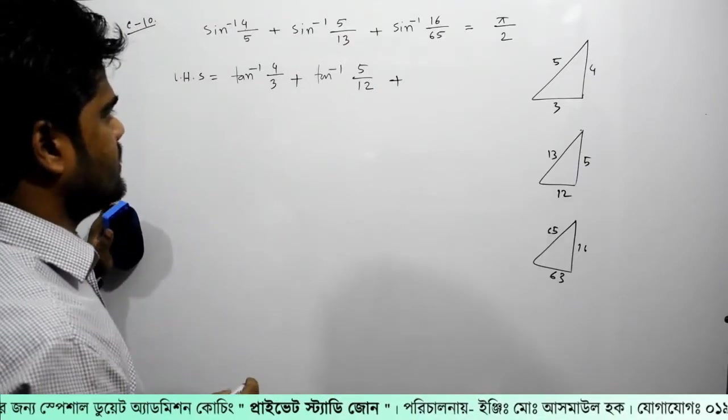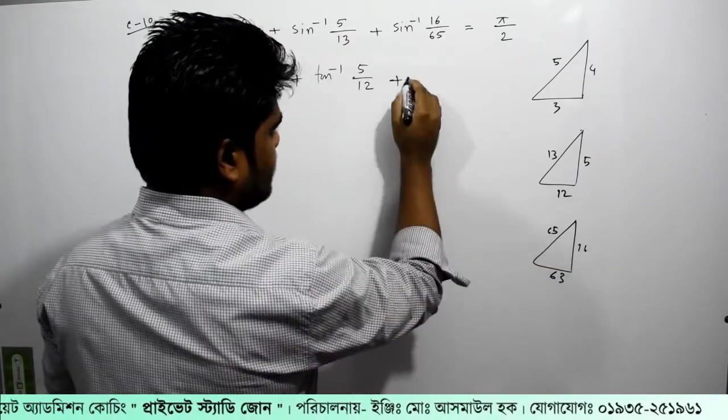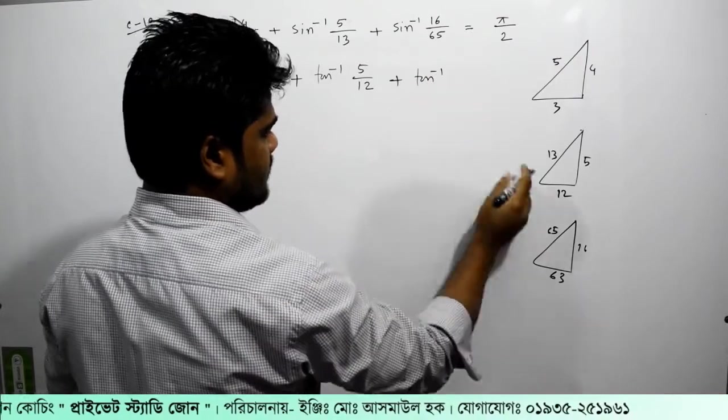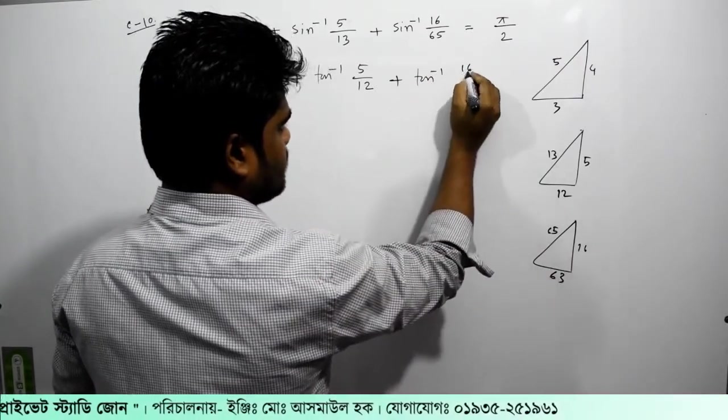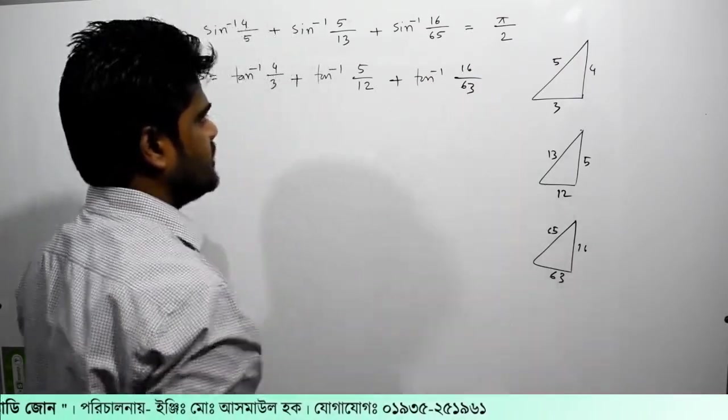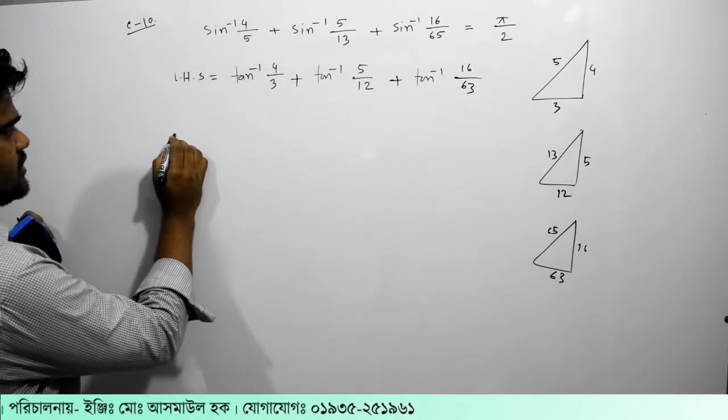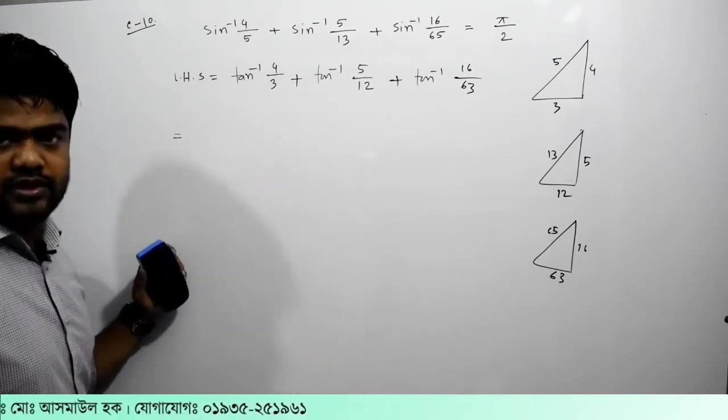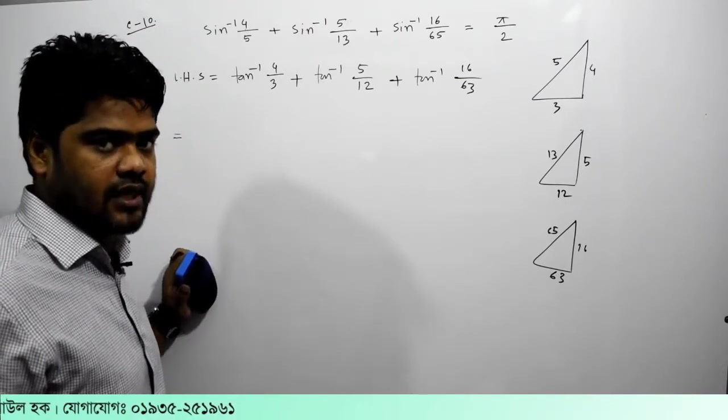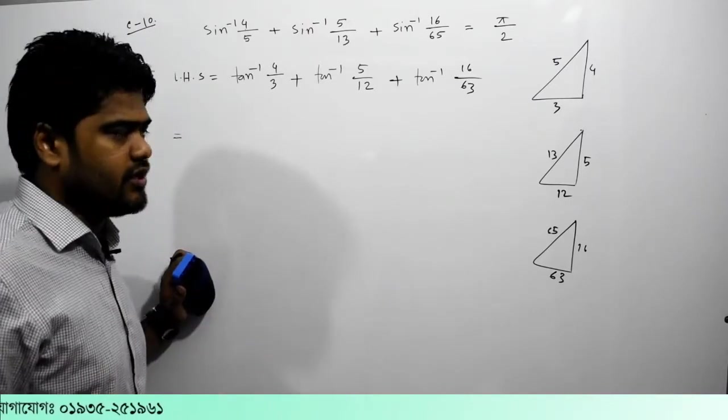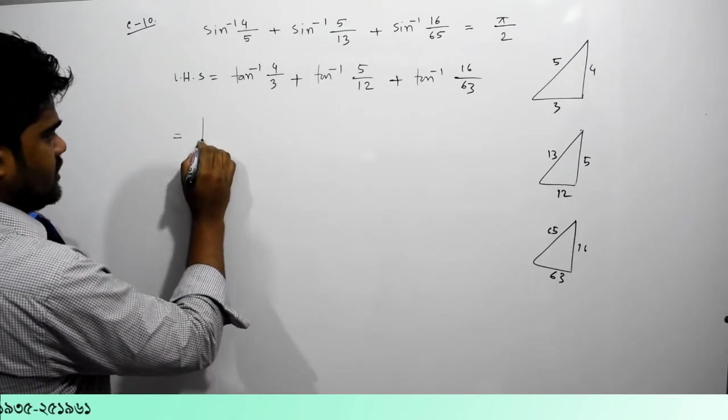This is the other one, tan inverse 6 by 13. We will put tan inverse, and we will put the other one tan inverse.